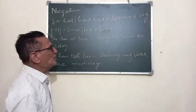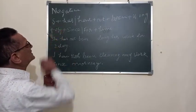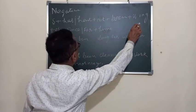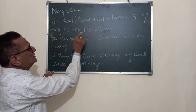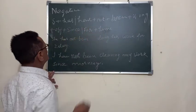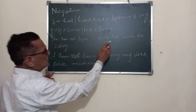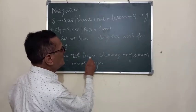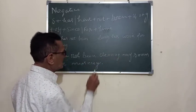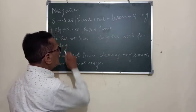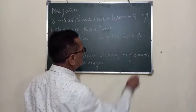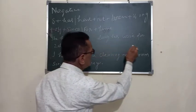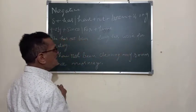Now I am going to tell you about the negative sentences. The structure is: subject + has/have + not + been + verb-ing + object + since/for + time. For example: She has not been doing her work for two days. I have not been cleaning my room since morning. She has not been learning her lesson since Monday. I have not been doing this thing since morning.